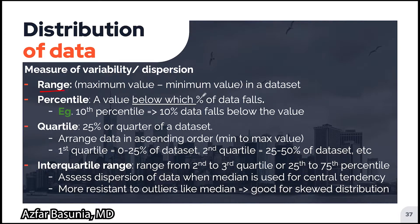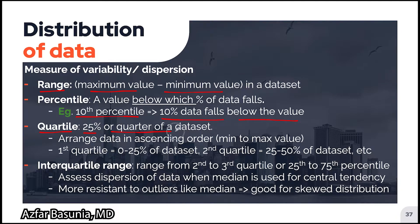The range of a data set describes the distance between the minimum and the maximum value and is calculated by taking the maximum value and subtracting the minimum value from it. A percentile describes a value below which a certain percentage of the data falls. A quartile represents 25% or a quarter of the data set.